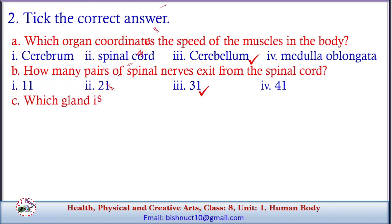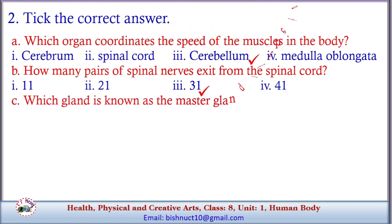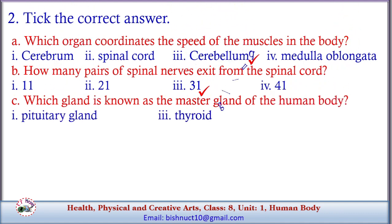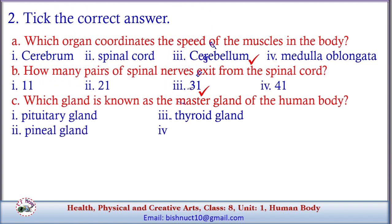C. Which gland is known as the master gland of the human body? Options: 1. Pituitary gland, 2. Thyroid gland, 3. Pineal gland, 4. Gonad. Answer: 1. Pituitary gland.